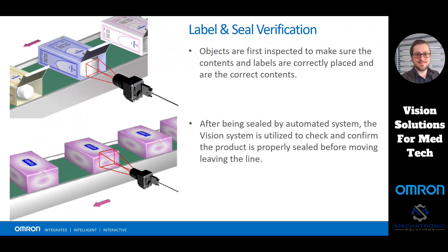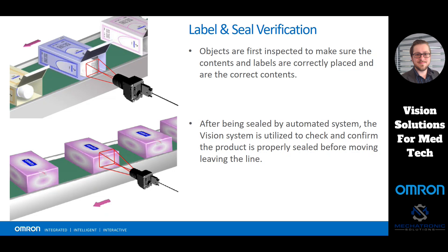Here's how it works: first, an object comes down a line where it's inspected to make sure the contents and labels have been correctly placed inside the box. Then, later down the line, once some automated process has sealed the box, the vision system is utilized again to confirm that the seal is correctly there. Once the product leaves the assembly line, we know the labels were properly placed and the seal on the container is secure — so if a customer gets a bottle of ibuprofen and the seal is not secured, they know not to use that product.